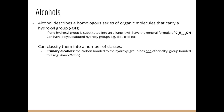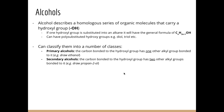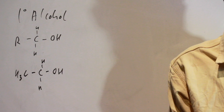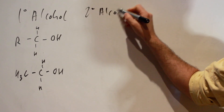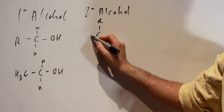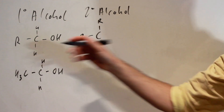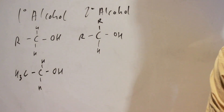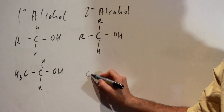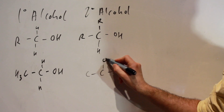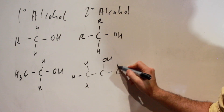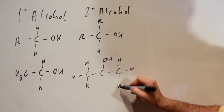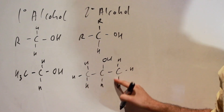Then we can have secondary alcohols — you can probably guess where this is going. The carbon bonded to the hydroxyl group has two other alkyl groups. So for a secondary alcohol, the carbon has two alkyl groups as opposed to one alkyl group and one hydrogen. The example is propan-2-ol: we have a carbon with an alcohol on carbon number two, and we have a secondary carbon because it's bonded to two other carbon chains.